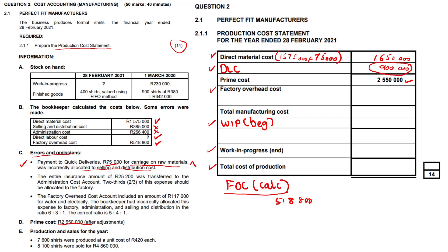We've finished with C.1. For C.2, the entire insurance amount of 25,200 rands was transferred to the admin cost account, but two-thirds of the expense should be allocated to the factory. We take 25,200 multiplied by two-thirds, which gives an amount of 16,800 rands to add to factory overhead cost.